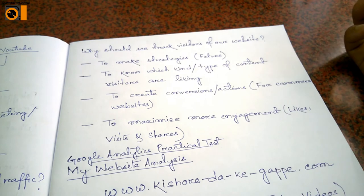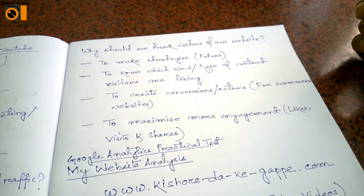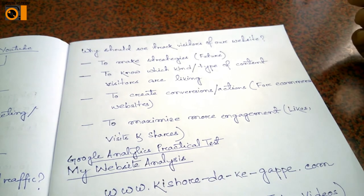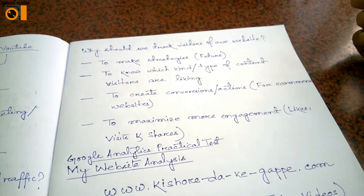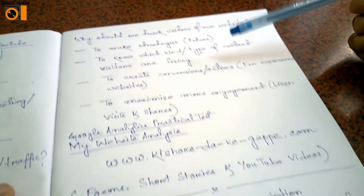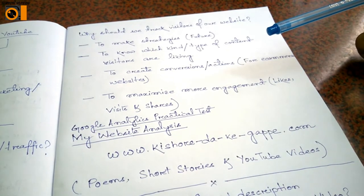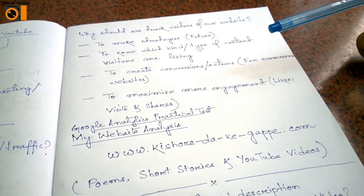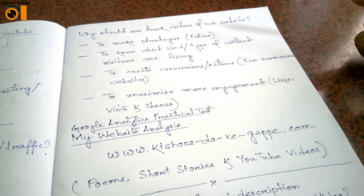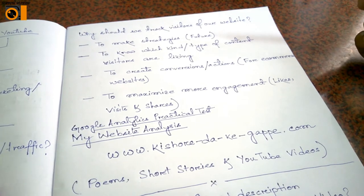Third, to create conversions and actions for e-commerce sites — those that have an add-to-cart button — and for non-e-commerce websites which have a submission form where they collect email IDs. Fourth, to maximize engagement, likes, visits, and shares. By getting an analysis of the characteristics, behaviors, and demographics of your visitors, you can directly target traffic on that basis very sharply via Google Analytics. I'll now give you a practical test to know it in a more precise manner.